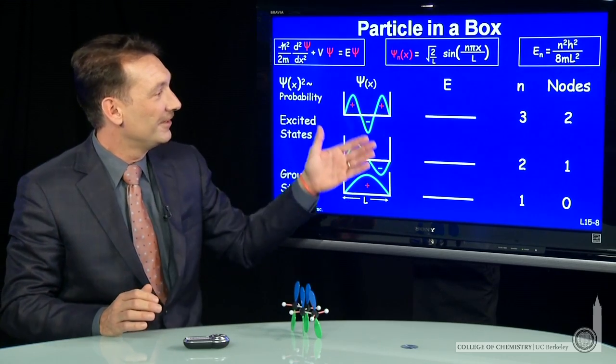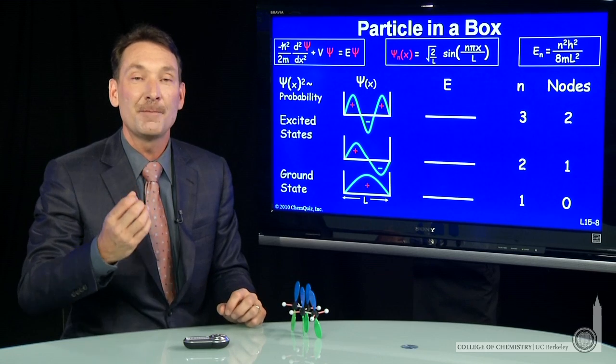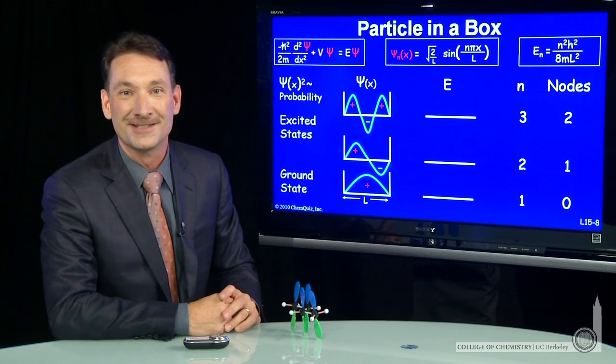And we'll use these kind of approximations about size of the box and the spacing of the energy levels to think about pi molecular orbitals, just like the energy levels of a particle in a box.